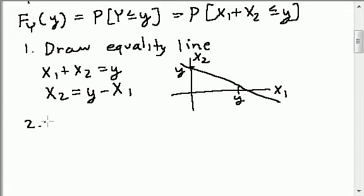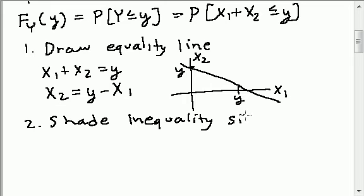So the step two is to figure out what area, which side of this line, is the correct side. So I'm going to say shade inequality side. And what that means is to figure out whether it's this side that's included in the equality, or points on this side that are included in the equality. Well, for example, let's say that y is positive, and so my picture does look like this, and I'm going to take y comma y.